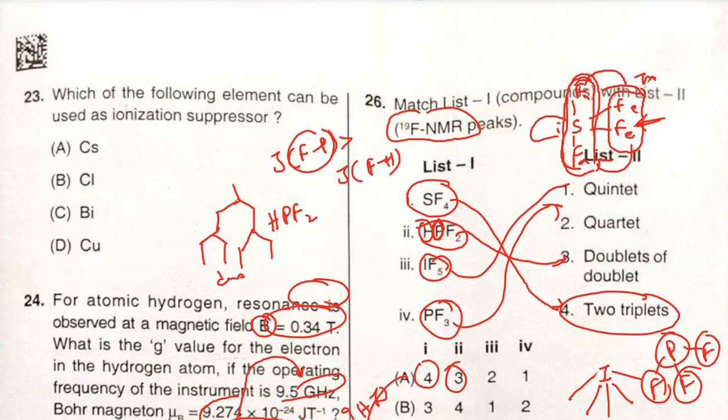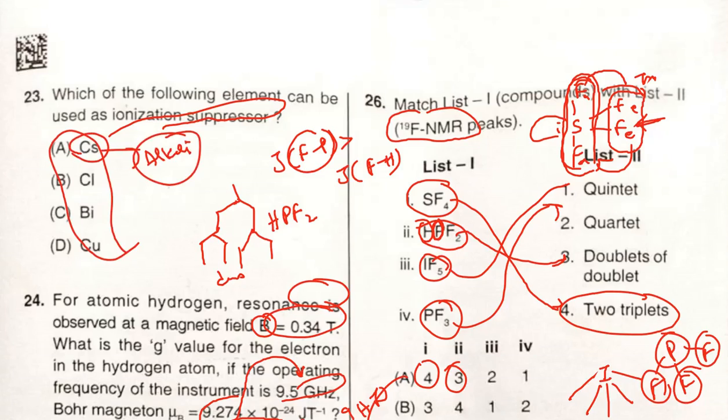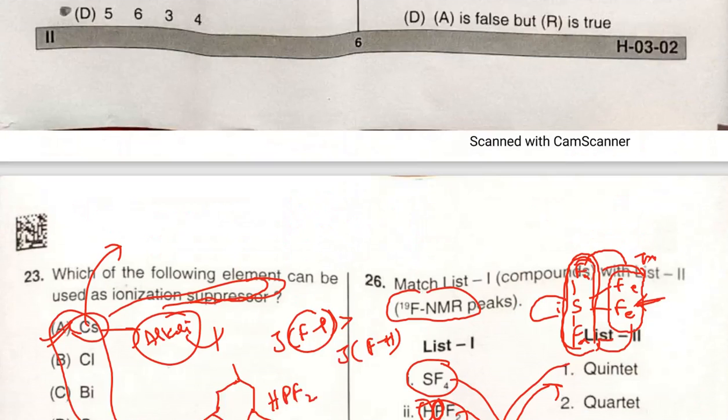Which of the following element can be used as ionization suppressor? Cesium belongs to alkali metal. So alkali metals are used as the best ionization suppressors. So option A is the correct answer. Alkali metals are easily ionized, so they can be used as ionization suppressors.